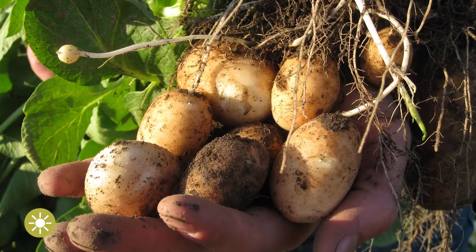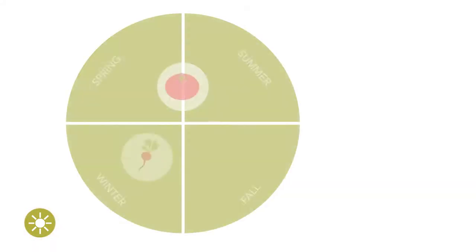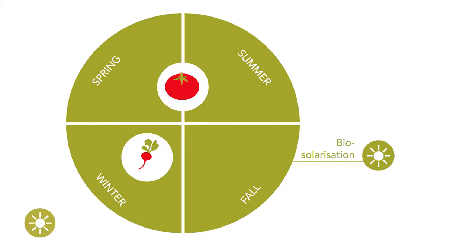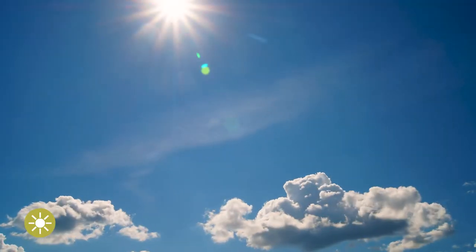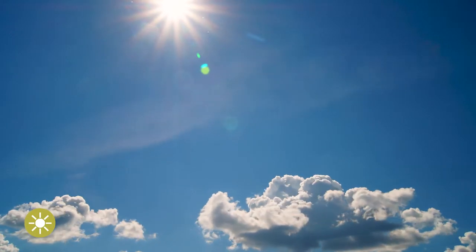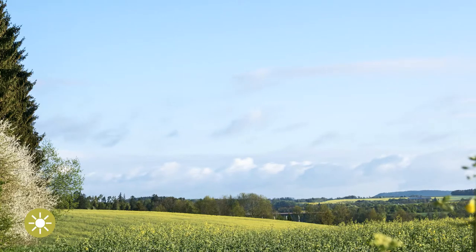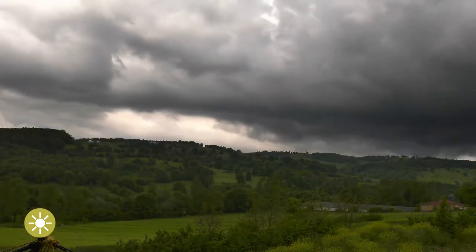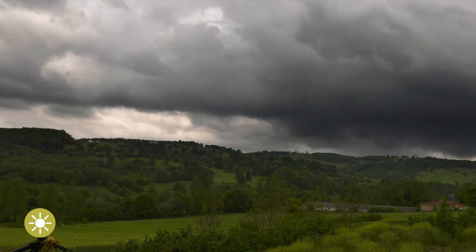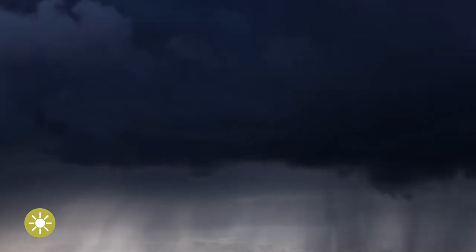However, there are some disadvantages associated with solarization. Very specific conditions are required to obtain efficient results, mainly high temperature and sunny days, that will not always correspond with fallow periods in temperate areas. Moreover, this period must span more than four weeks and ideally reach six weeks. The duration may need to be further extended if a cover crop or green manure is going to be used for biosolarization.